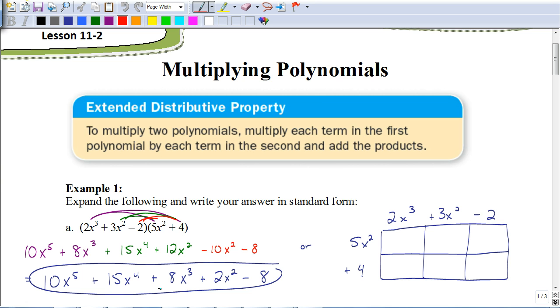Now, that's using what I call the extended distributive property. That can be kind of unorganized, and there's a lot of room to make mistakes with forgetting to add numbers together or not quite multiplying right. So, that's why I like using this other method, which is just what I call the box method of multiplying. So, I set up the 5x squared plus 4 on one side and the 2x cubed plus 3x squared minus 2 on the other side. You could have these switched around, and you'd end up with the same answer.